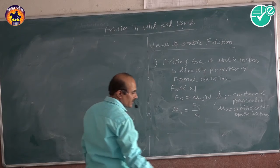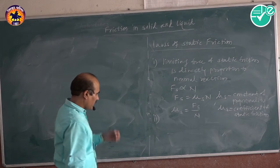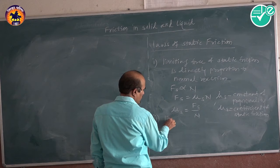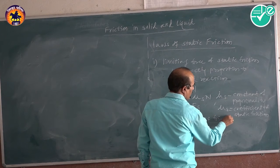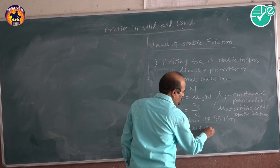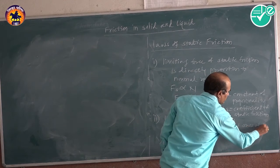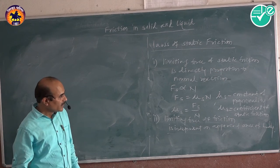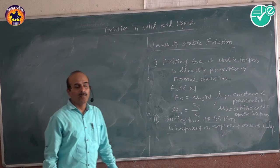Now, we want to see the second law. The second law states that the limiting force of friction is independent of the apparent area of the body. The second law: the limiting force of friction is independent of the apparent area of the body.